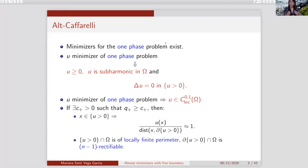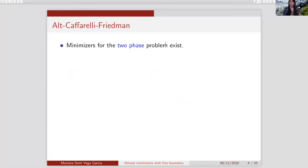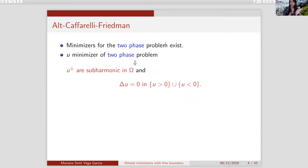Regarding the two-phase problem, studied by Alt-Caffarelli-Friedman: using standard methods of calculus of variations, you can show minimizers exist. Now we have u-plus and u-minus — it is not necessarily true that u is greater or equal to zero, but u-plus and u-minus are going to be subharmonic, and the function will be harmonic where it is positive and where it is negative. We will not have any of that for our almost minimizers.